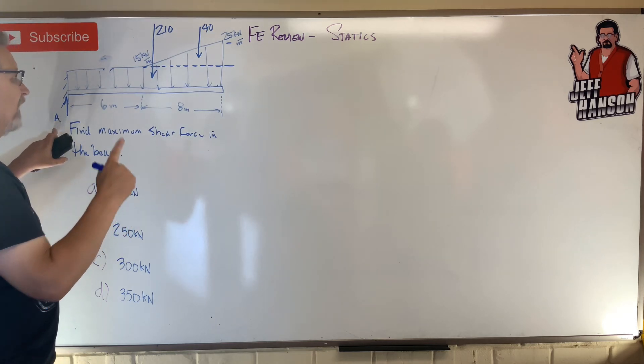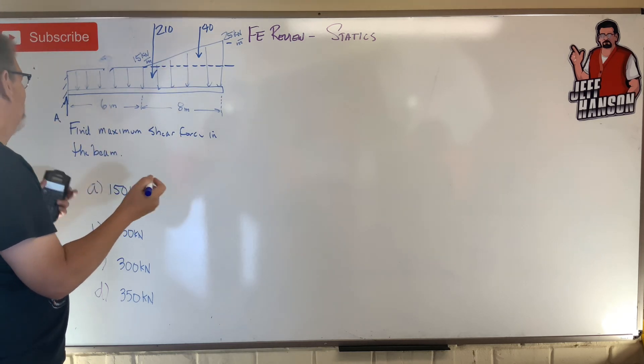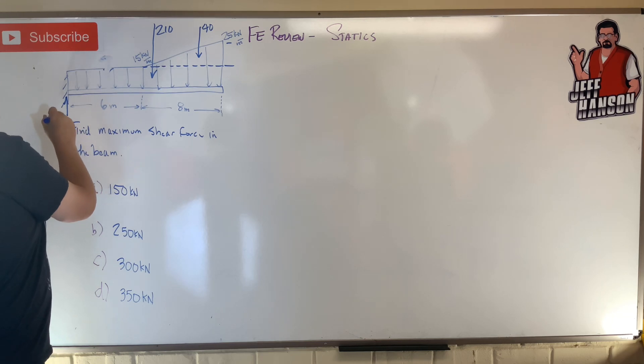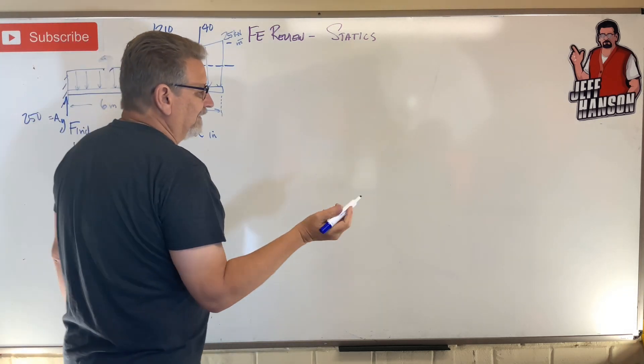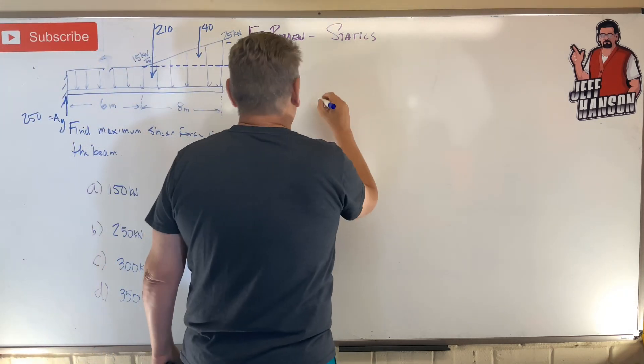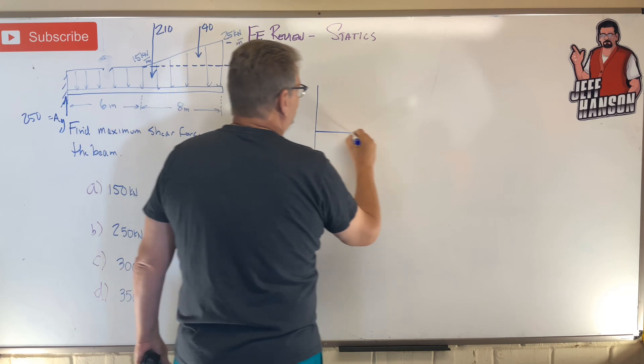Okay, so that means that A, the upwards force, must be what? Ay must be equal to up stuff equals the down stuff: 250. Okay, and I'm thinking that's probably our answer there, isn't it?